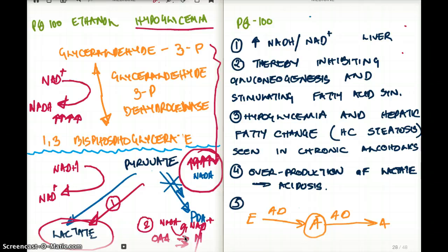The other thing is why do alcoholics have fatty acid or hepatic steatosis? The reason for that is when oxaloacetate to malate is favored, malate goes into fatty acid synthesis.